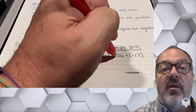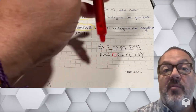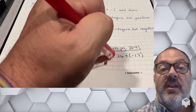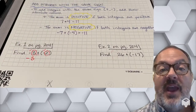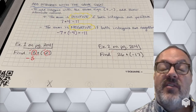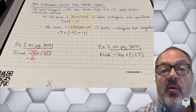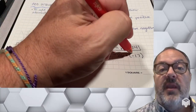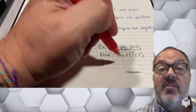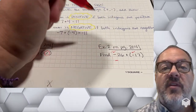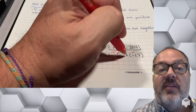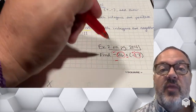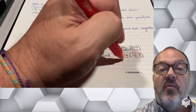In example 2, once again both of my integers are negative numbers. I have negative 26, and I'm going to add to that a negative 17. Since both of them are negative integers, my sum will also be a negative number — just going to be a larger negative number. So I just need to take 26 and add 17 to it, which gives us 43.